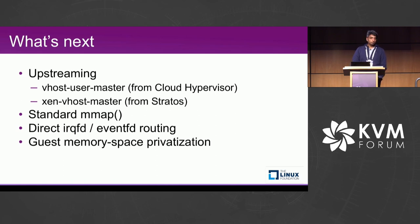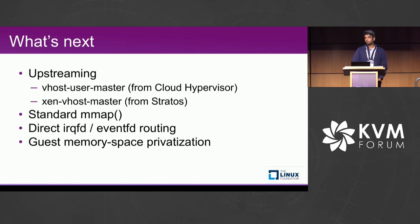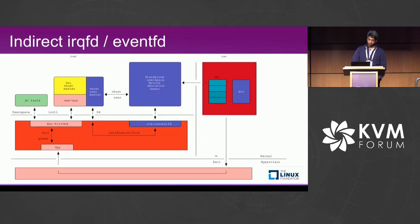Looking ahead, we are working to upstream the vhost-user-master crate — picked from Cloud Hypervisor — and the Xen vhost master, which we implemented ourselves. We already have pull requests to the Rust VMM community on GitHub. We also need a standard mmap interface. We see an opportunity to improve performance by reducing the number of context switches required for IRQFD and eventFD from the guest to the backend, and there is space for guest memory space privatization.